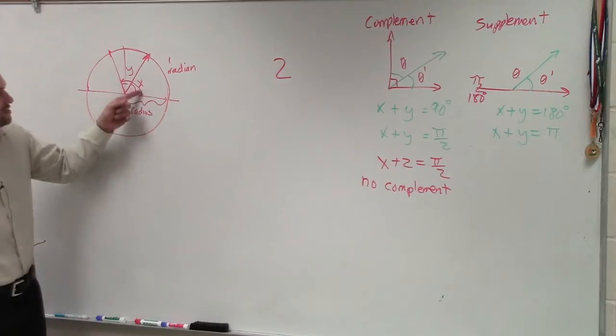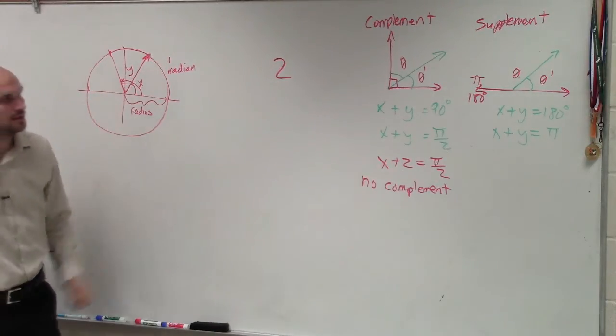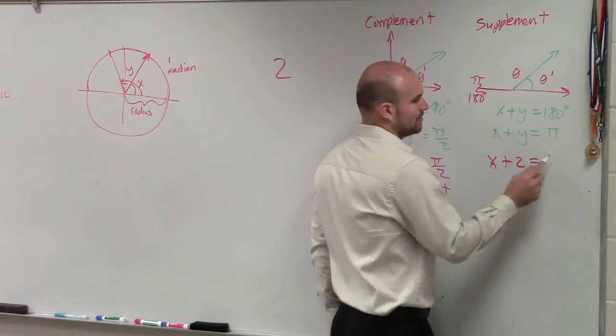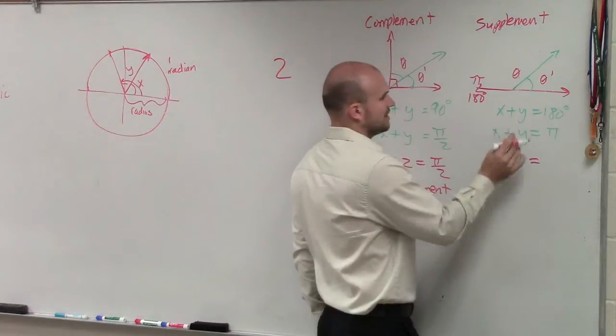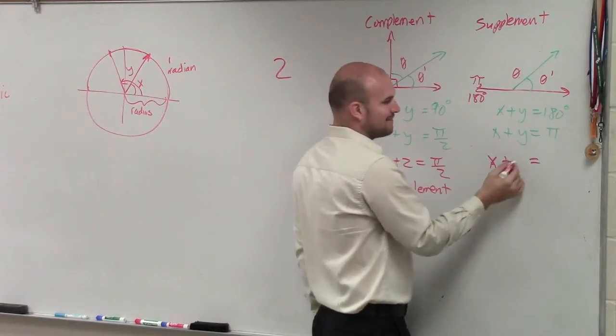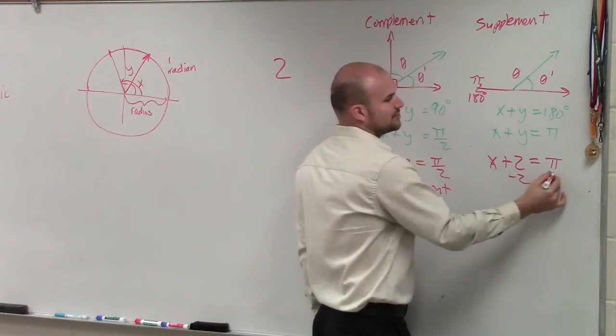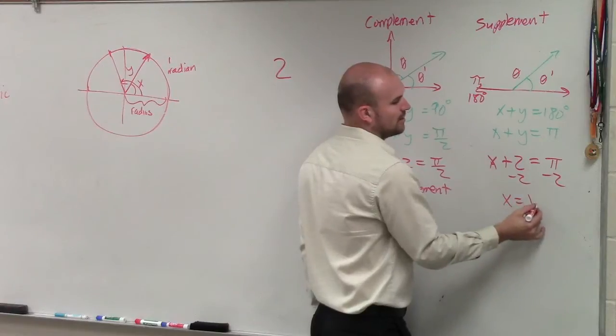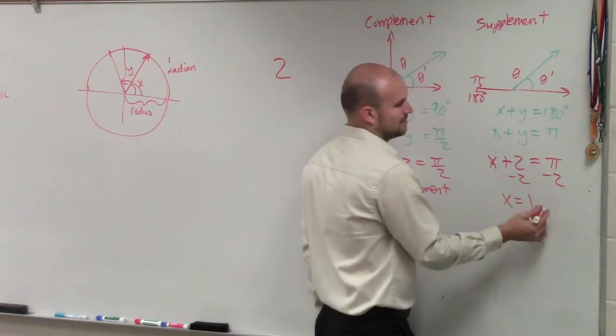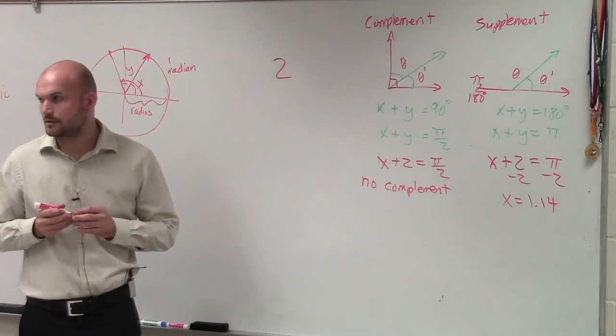Because, again, the angle is already greater than pi halves. But we can do supplements. So I do x plus 2 equal, or I guess the equations would be theta and theta prime. I forgot to change those. Sorry. So it'd be x plus 2 equals pi. Subtract 2, subtract 2. x equals 3.14... 1.14 as you round it.